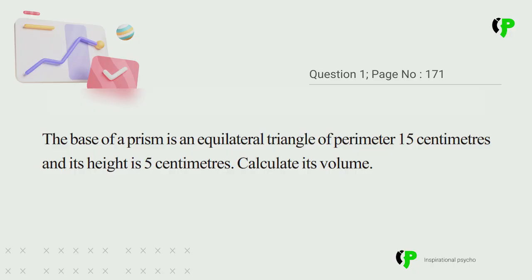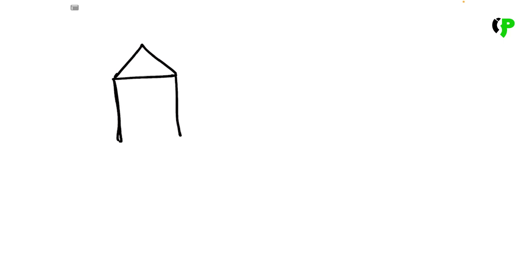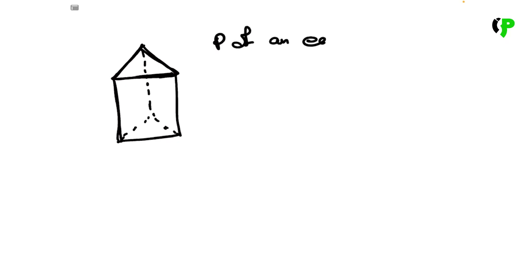Let's start with the first question. The base of a prism is an equilateral triangle. We will draw the base triangle. If you have a triangle, you will have rectangles on the sides. The perimeter of the equilateral triangle is 15 cm.